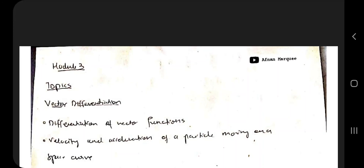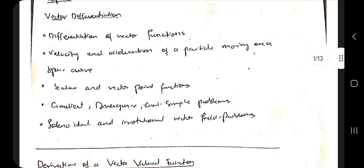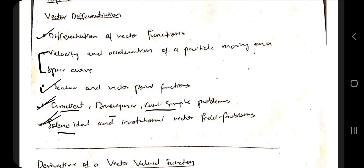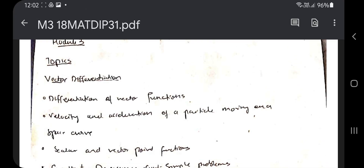Hello everyone, today in this video we'll be discussing Module 3 of 18MAT DIP 31, which covers vector differentiation. There are four main topics: differentiation of vector functions, scalar and vector point functions, gradient, divergence and curl, and solenoidal and irrotational vector field problems. If you like this video, hit the like button and subscribe to my channel.